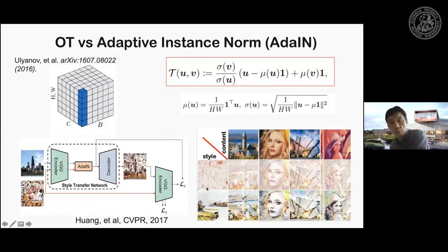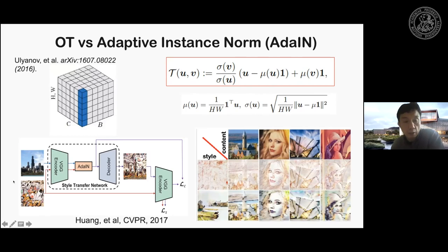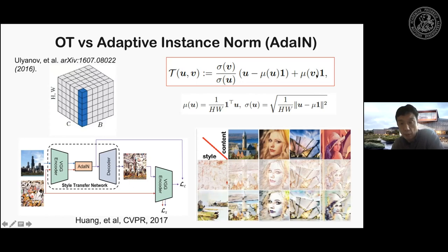This is closely related to so-called Adaptive Instance Normalization in image style transfer. In style transfer, the goal is to convert a photo image to an artistic texture given by a style image. The idea is: in the feature layers, for each channel we compute the mean and variance, then transport this to the style image's statistics. From this, you can generate an image that looks like the artistic style.